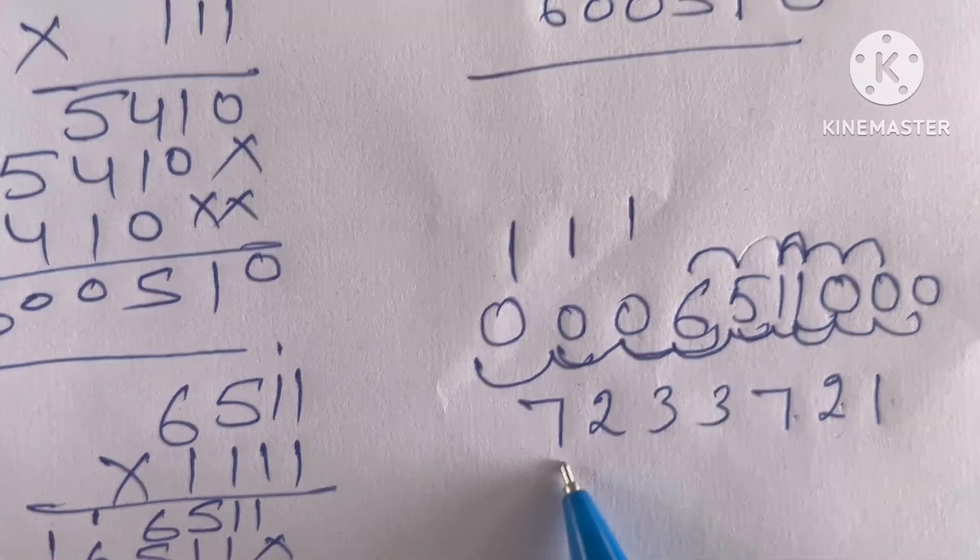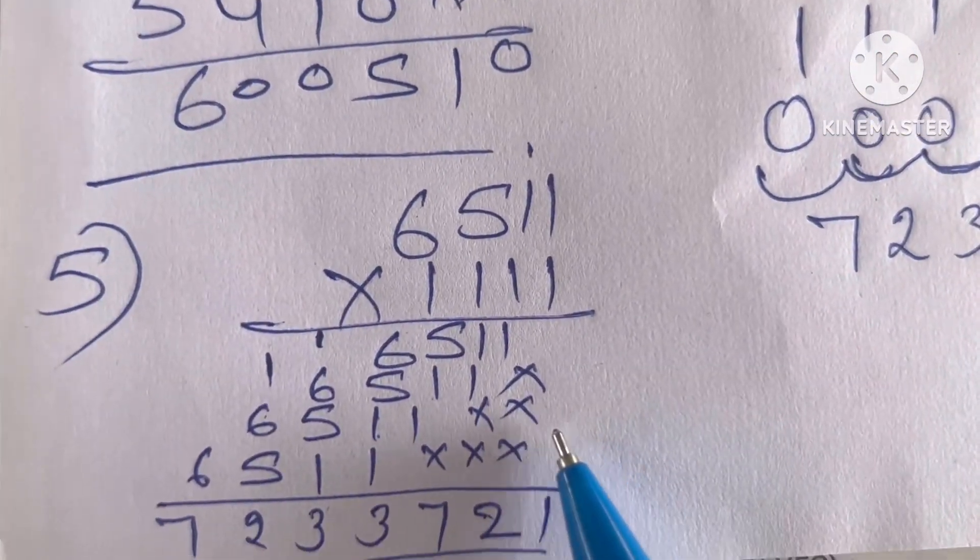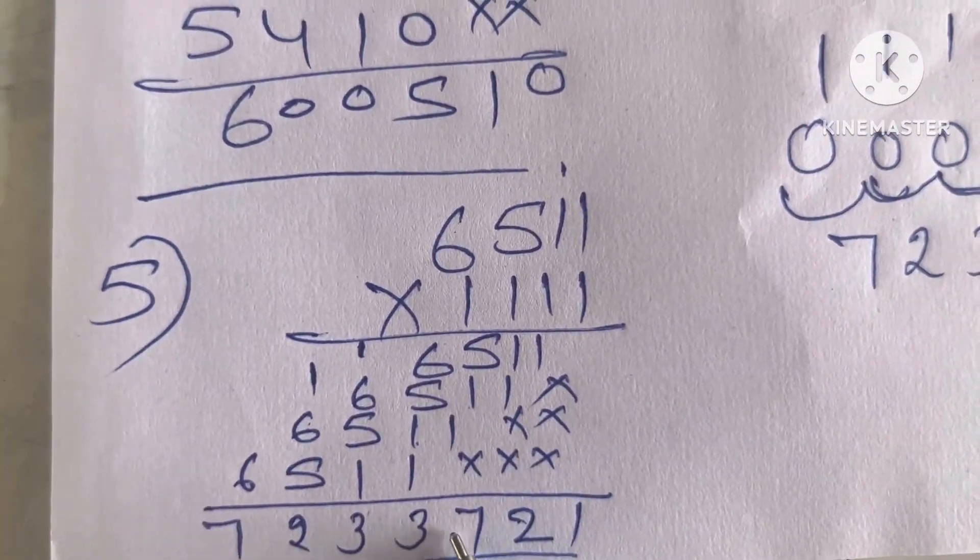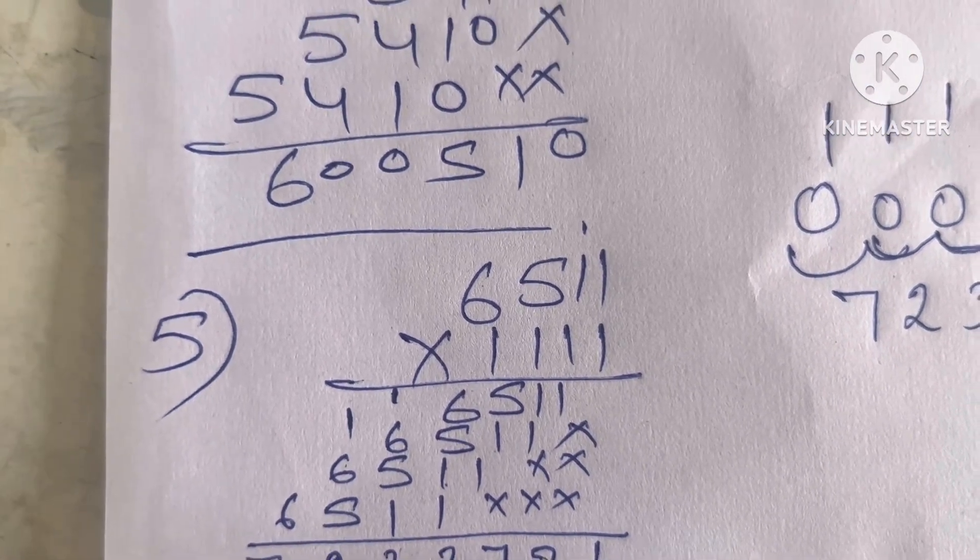So, answer comes out to be 723,372. And by direct multiplication also, answer comes out to be 723,372.